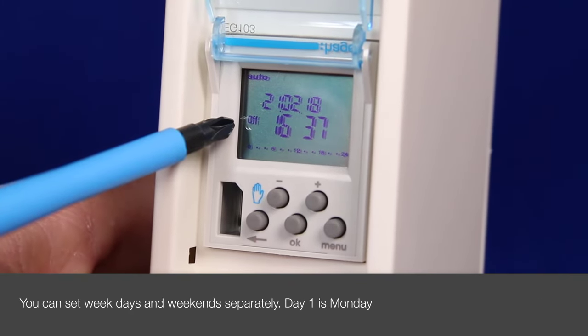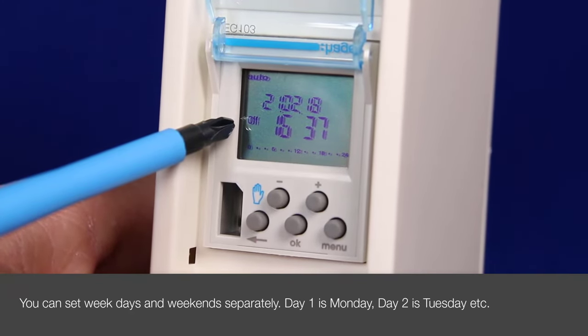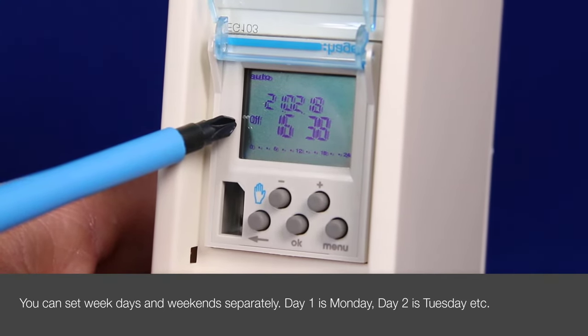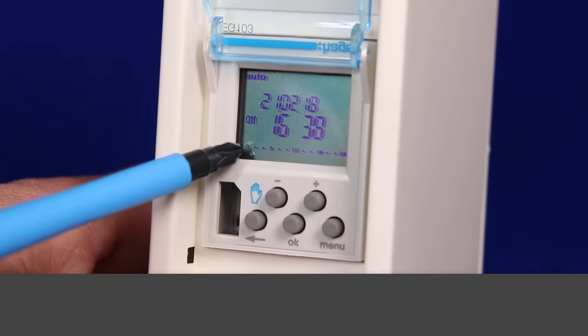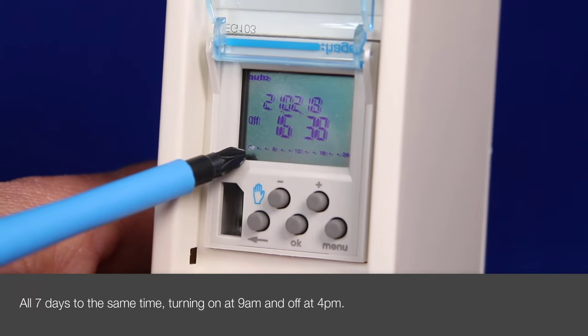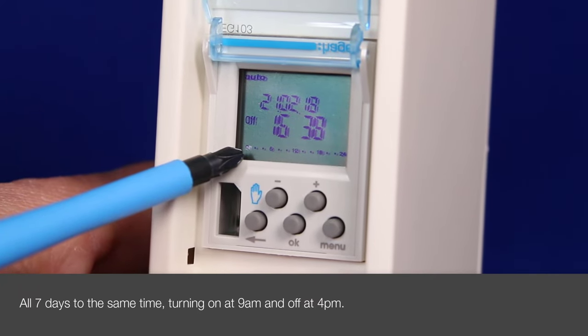You can set the timer for each day or for groups of days, for example weekdays and weekends differently. Day 1 represents Monday and day 7 represents Sunday. In this example we will set all 7 days to be the same time, turning on at 9am and off at 4pm.